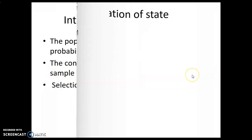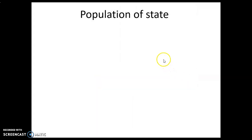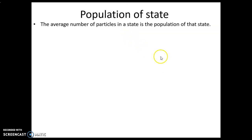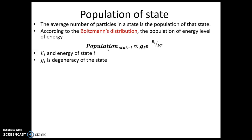When we talk about the population of states, we're talking about how many molecules are present in a particular state — the average number of molecules in the vibrational ground state or rotational ground state from which the transition will take place. The higher the number of molecules present in the initial state, the more likely a transition will take place from that state.